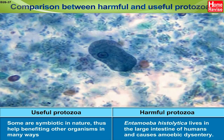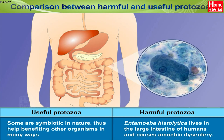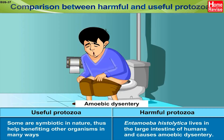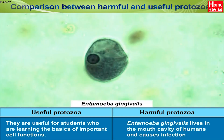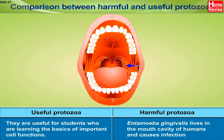Harmful protozoa like Entamoeba histolytica lives in the large intestine of humans and causes amoebic dysentery. Entamoeba gingivalis lives in the mouth cavity of humans and causes infection.